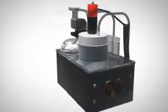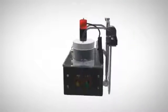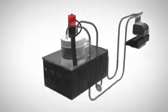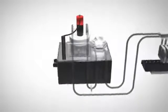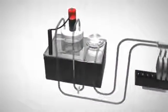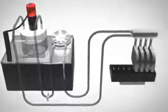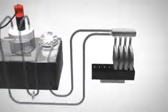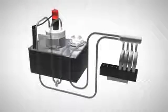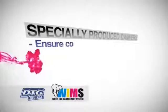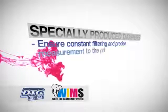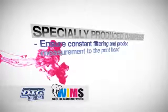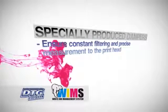The WIMS system is designed to constantly recirculate the white ink under moderate pressure so that the separation is drastically reduced. White ink is pumped via the peristaltic pump very similar to a heart pump to a reservoir above the dampeners and then back to the container in a sealed closed-loop pressurized system. Specially produced pressure-release dampers ensure constant filtering and a precise measurement of ink is then fed to the printhead.